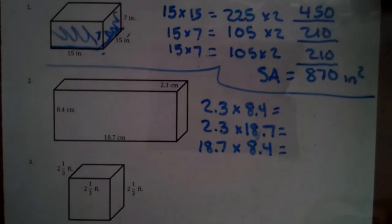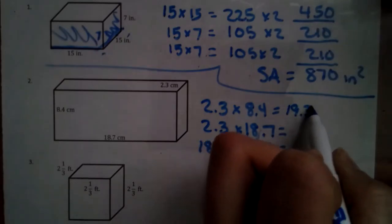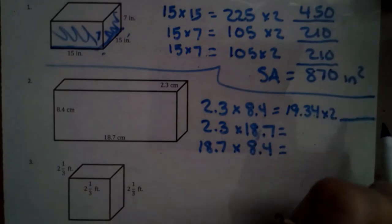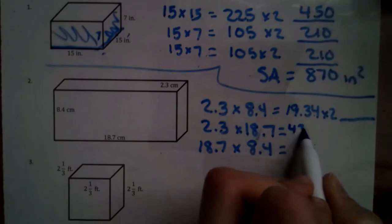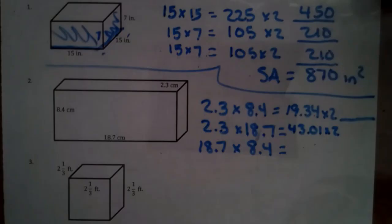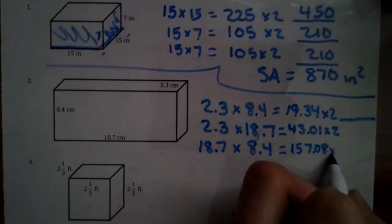So we have 2.3 times 8.4, which will equal 19.34. That's one of them. So we have to times it by 2 because we need two of them. And then we can remember two numbers after decimal point. See one, two. That's why we jump. Now we have 2.3 being multiplied by 18.7, which is 43.01 times 2 again. And then we have 18.7 times 8.4, which is bigger, which is 157.08. We have to times that by 2.